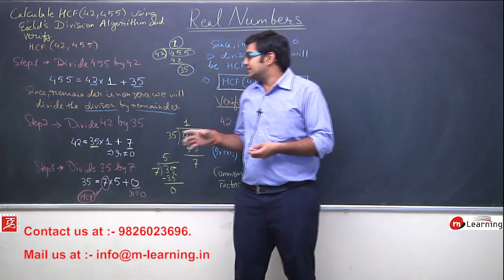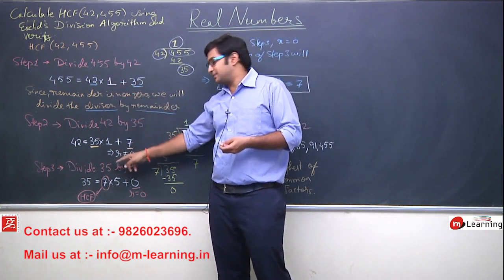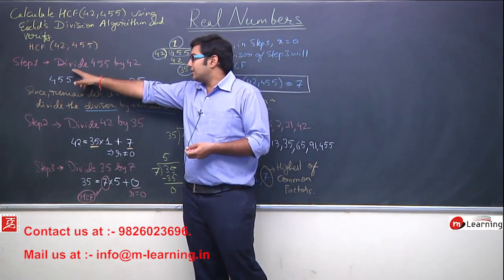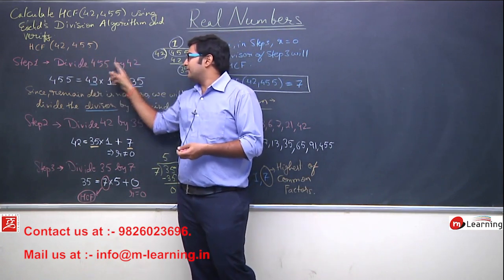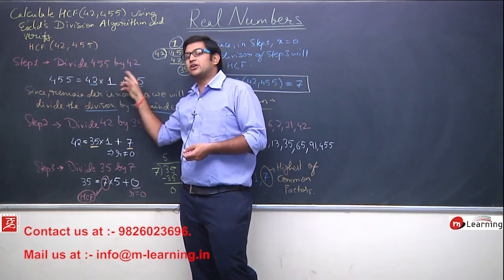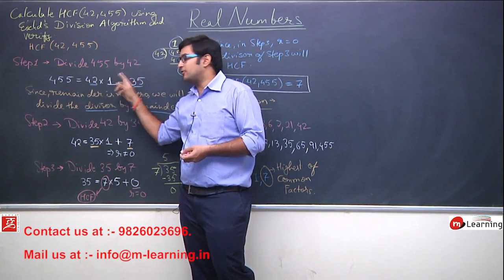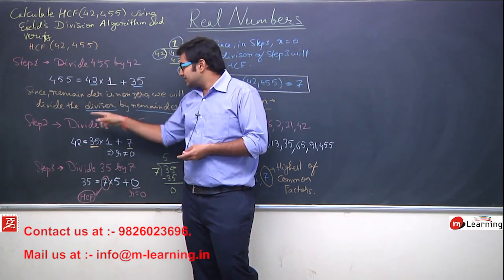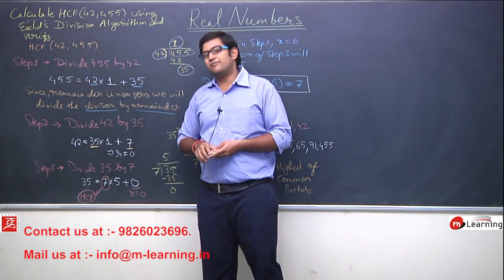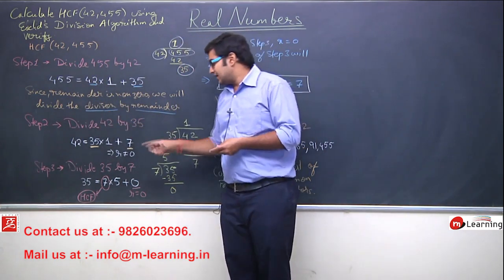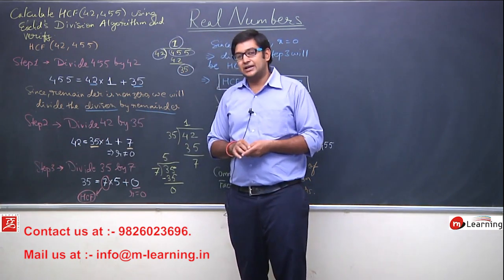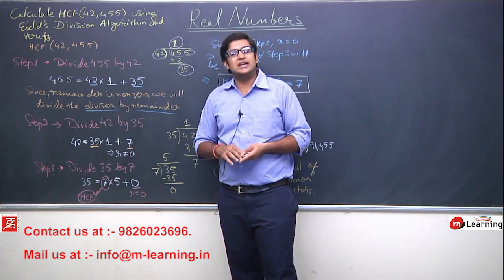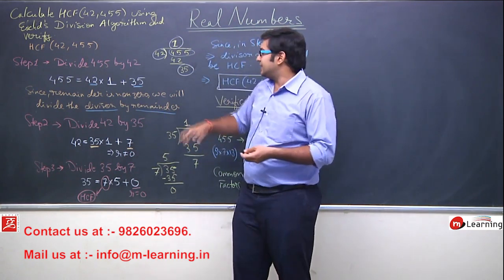So now, ab mind me ye question aata hai ki ye algorithm applicable kyu hai, aisa kya hai is algorithm me ki ye har bar apply ho raha hai aur har bar hume result mil raha hai. So for that let us understand, let us analyze these steps, these values that I have written. Is step me aap dekh rahe hai, hum algorithm apply kar raha hai, 455 aur 42 pe. Division algorithm kis pe apply kar raha hai, 455 aur 42 pe, aur ye division perform kar diya. Similarly, second step me hum 42 aur 35 pe, ye algorithm apply kar raha hai, aur humne division algorithm apply kar diya. Third step me hum 35 aur 7 pe, ye division algorithm apply kar raha hai.